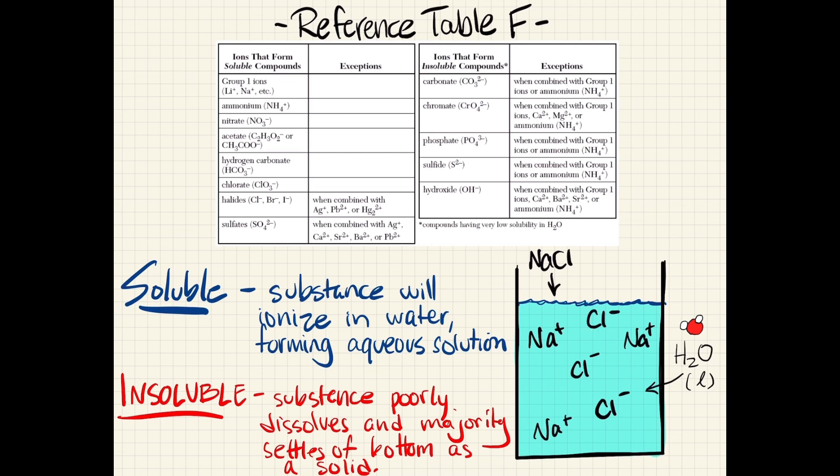However, if we were to add another compound into water, we might get a different result. If we were to use, for example, another halide called lead two iodide, we could see that all halides are soluble, but when halides are combined with either silver, lead, or mercury, they will form an insoluble product. This means you'll see it on the bottom of a beaker because it will not dissolve into water.